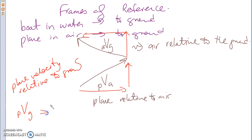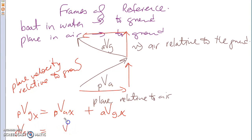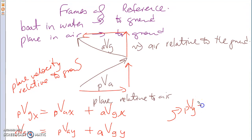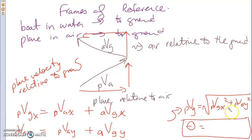Then you would say VPGx equals VPAx plus VAGx, and VPGy equals VPAy plus VAGy. Then you do the Pythagorean theorem: VPG equals the square root of VPGx² plus VPGy². Then you find the direction using theta. So again, exactly the same format as vector components — the only difference being that you've got different variables. That was Chapter 1.